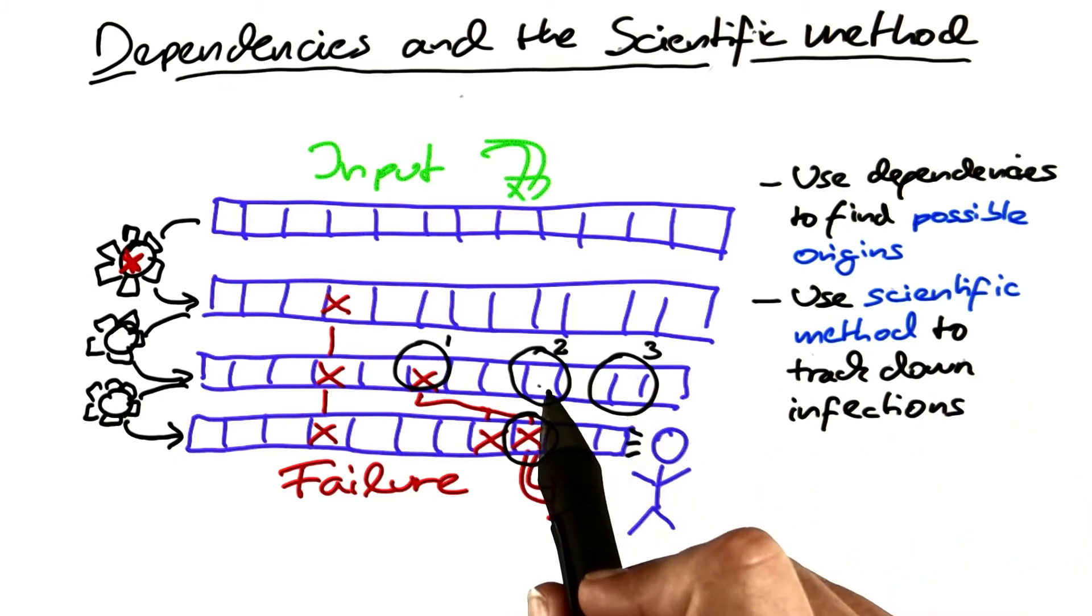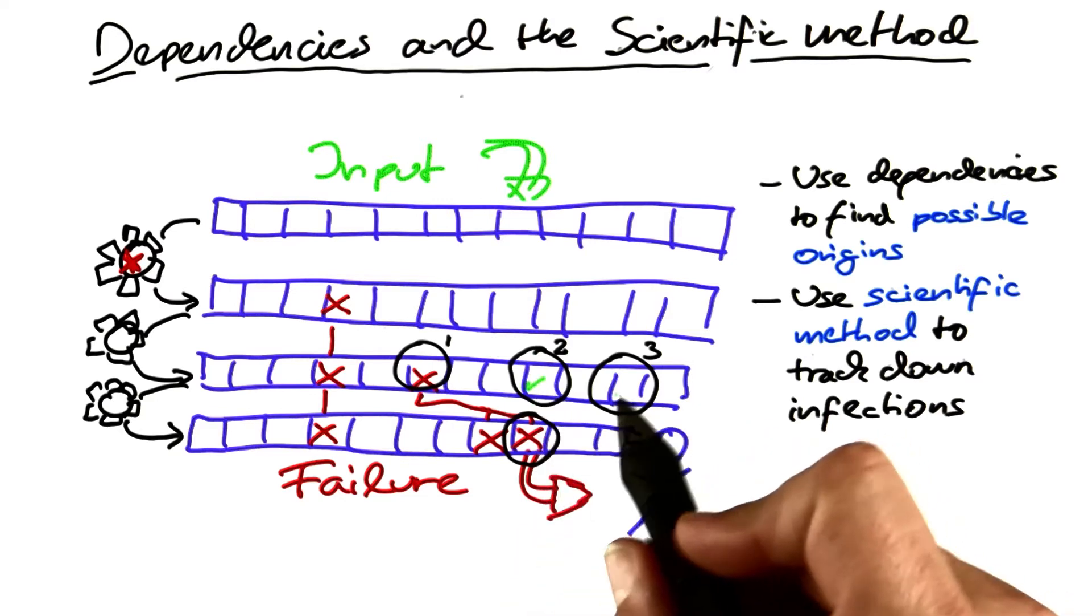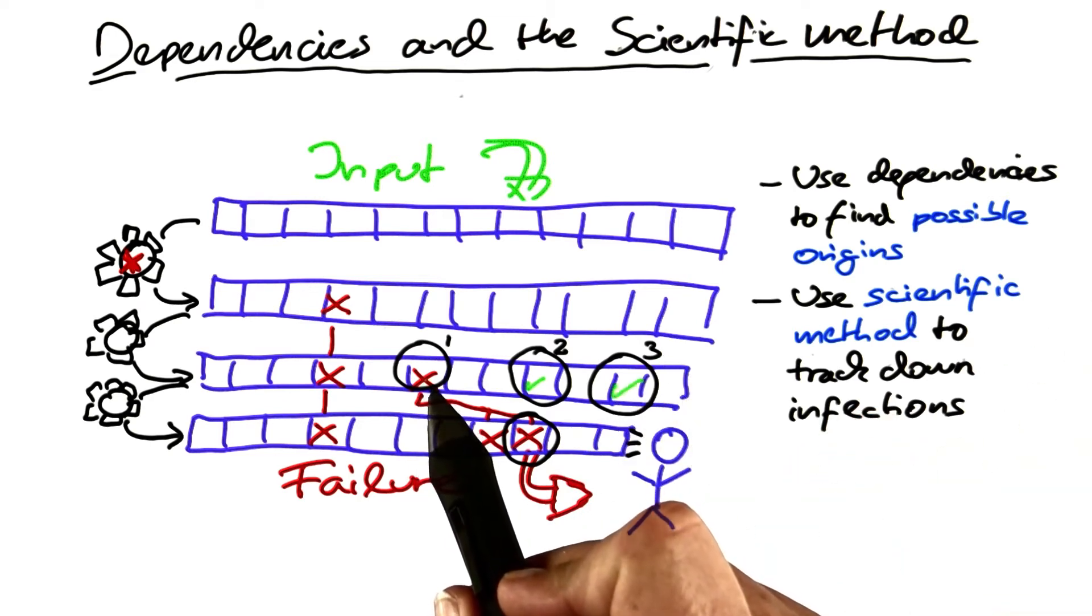We set up an experiment. We make the appropriate observation. And we gradually refine or reject our hypothesis until we have come up with a diagnosis and figured out which part of the state is wrong.